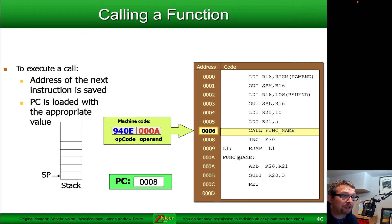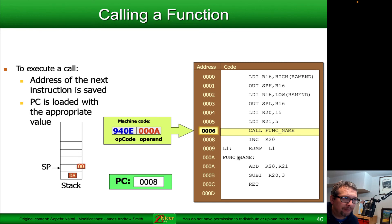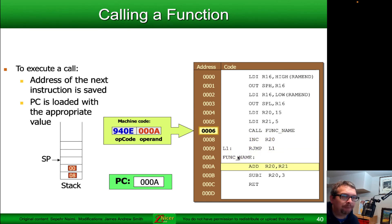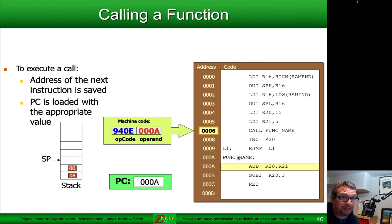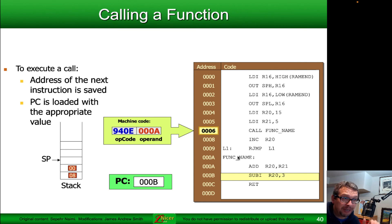We call the function named func_name. When we do that, we store the address of the next instruction — 0x0008 — onto the stack at the location pointed to by the stack pointer. So 08 and 00 are placed on the stack, and the stack pointer moves out of the way. At the same time, the program counter jumps to the location of the function, 0x000a, which is where the add R20, R21 operation is. Then we do the subtract immediate at 0x000b, and then the return at 0x000c.